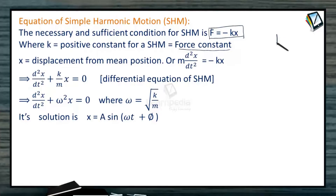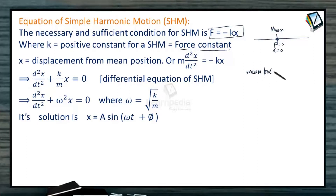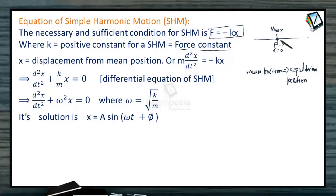That means if the particle is at x = 0, which is essentially the mean position of the particle, the force acting on this particle remains 0. So the mean position is basically the equilibrium position, where the net force acting on the particle becomes 0. But when it moves away from the mean position, say along the x-axis by a distance x,